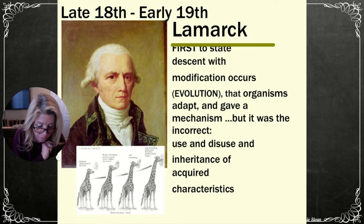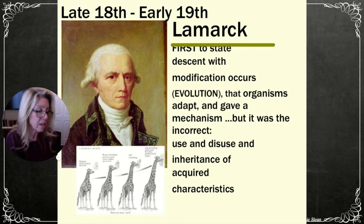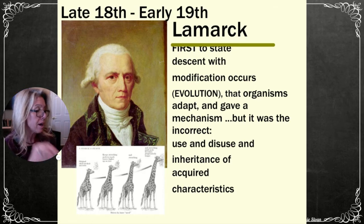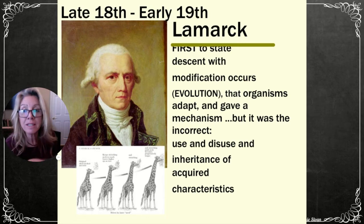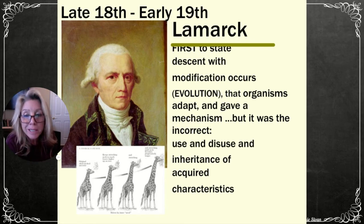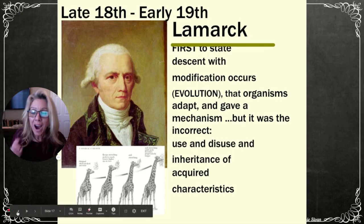Lamarck incorrectly proposed the inheritance of acquired characteristics — adaptations acquired during a lifetime that get passed on. Darwin's contrast: do not confuse the two. Make sure you can differentiate between Lamarck's use-and-disuse and Darwin's heritable natural selection.